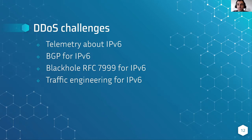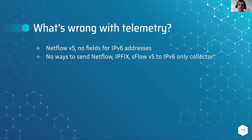We have many challenges specific to DDoS and IPv6. I'll briefly explain each topic: telemetry — how we actually export information about IPv6 traffic; BGP for IPv6; black hole implementation; and traffic engineering. When enabling and deploying any solution for attack detection or network automation, the first thing is delivering traffic information from your equipment. One of the challenges here is people who love old technologies. One of the most popular network telemetry protocols is NetFlow, and it has a few versions: version 5, version 9, and version 10 which is also known as IPFIX.